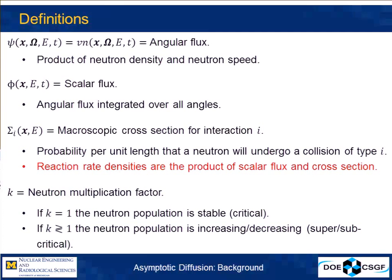Finally, there's the neutron multiplication factor, or reactor eigenvalue, simply K for short. K equals one means the neutron population is stable; greater than one means it's increasing; and less than one means it's decreasing. So this is a very important quantity defining the reactor.